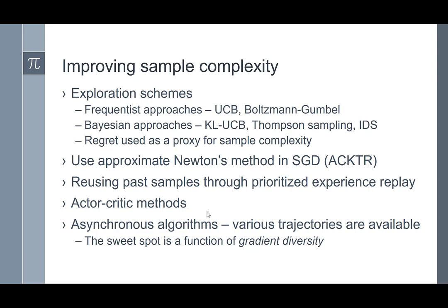When doing gradient descent, you should always think about Newton's method, because it is much faster than vanilla steepest descent. We discussed approximate Newton's method in stochastic gradient descent to improve sample complexity. The ACTOR-critic algorithm was highlighted as one that improves sample complexity in reinforcement learning. We also talked about prioritized experience replay, which improves sample complexity by allowing the same sample to be used several times during training.